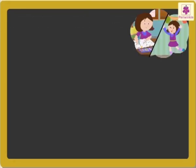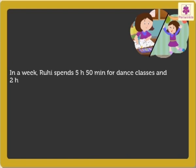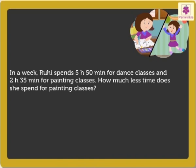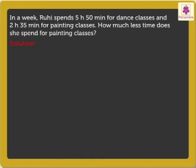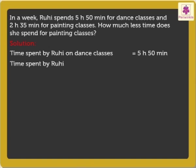Now, let's solve a story problem related to this. In a week, Rohi spends 5 Hours 50 Minutes for dance classes and 2 Hours 35 Minutes for painting classes. How much less time does she spend for painting classes? First, let's write the statements. Time spent by Rohi on dance classes is 5 Hours 50 Minutes. Time spent by Rohi on painting classes is 2 Hours 35 Minutes.